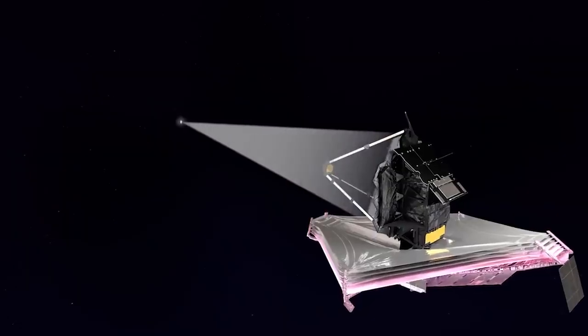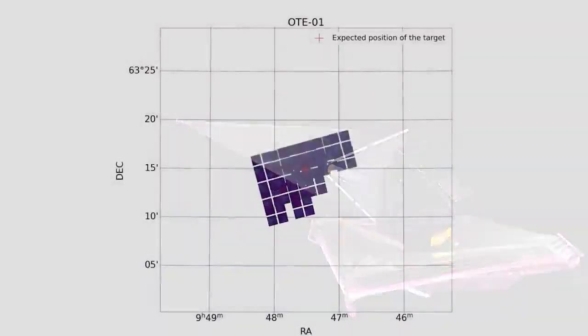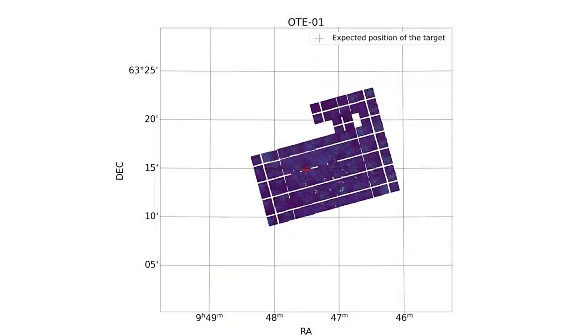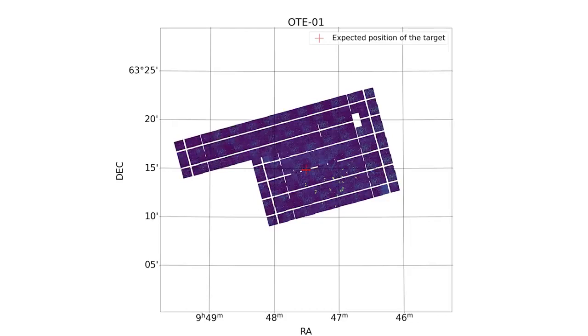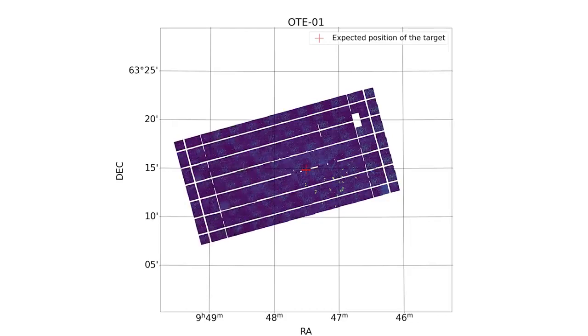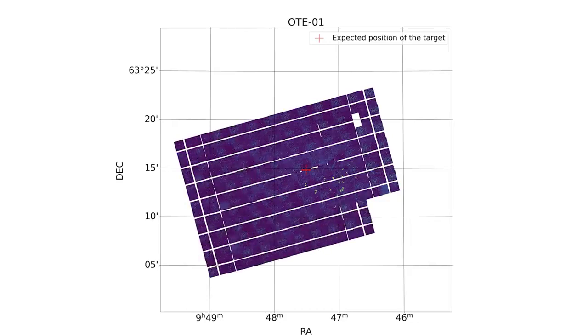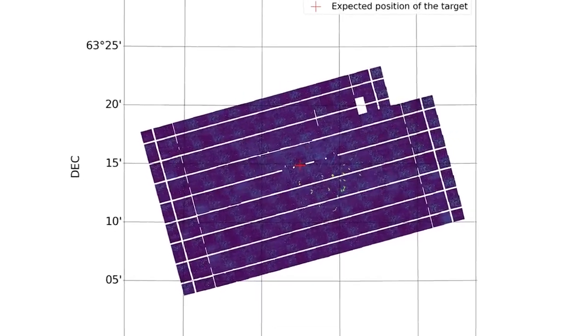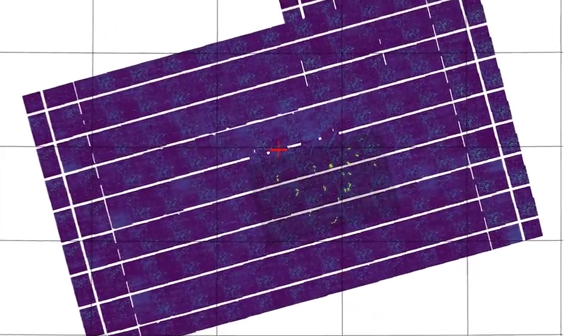And so we pointed at a bright star and we made a mosaic. We actually took the near-infrared camera and took images in different parts of the sky. And then we looked for the 18 spots from the 18 different telescopes, if you will, and we were very excited to find them.